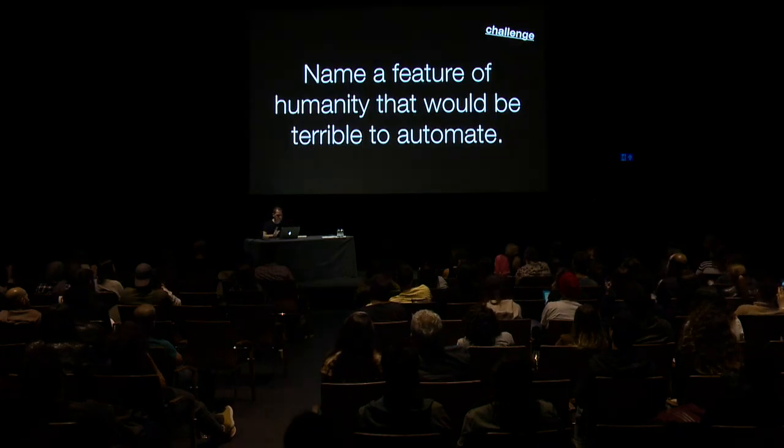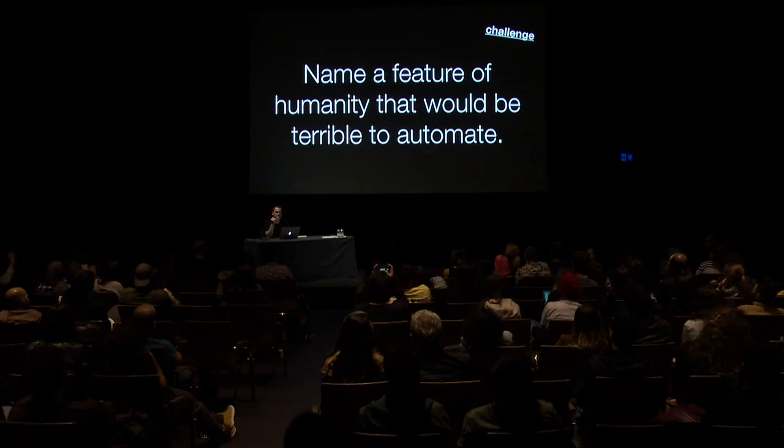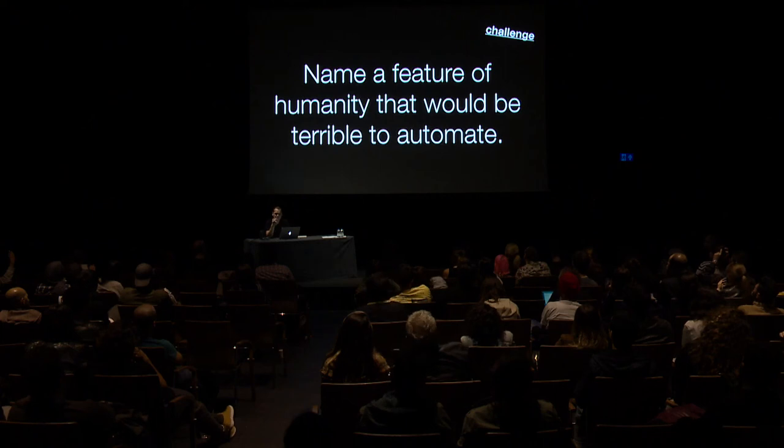This is the next challenge: name a feature of humanity that would be terrible to automate. For me, the first thing that comes to mind is making assumptions about people based on the way they look — I don't want computers doing that, and I don't want humans doing that either. Maybe there's a corollary: name a feature of humanity that would be incredible to automate. I think being open to change in ourselves, being open to other people changing — I'd like to see computers be able to do that. Maybe being able to put other people before ourselves. I think we're building systems that replicate some of the worst things that humans do.